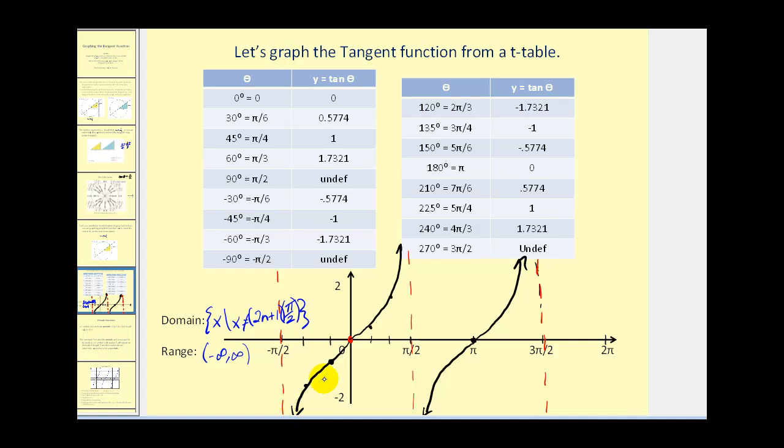Tangent theta does not have an amplitude because there's no max or min. The period would be pi radians.